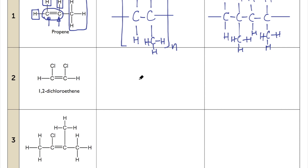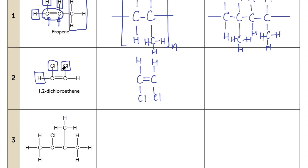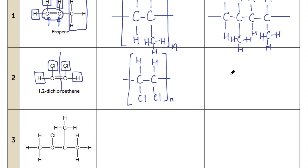For question two, we first look for the C=C double bond. The carbon on the left has one hydrogen and one chlorine; the carbon on the right also has one hydrogen and one chlorine. We highlight this, then remove the double bond, draw lines across, put in the brackets and n. For two repeating units, just draw the structure twice.